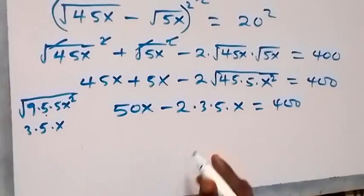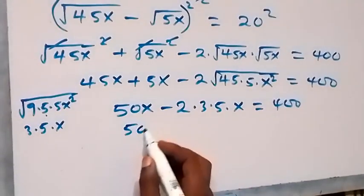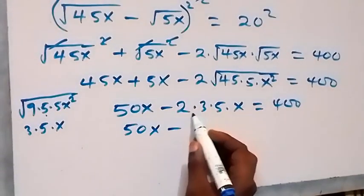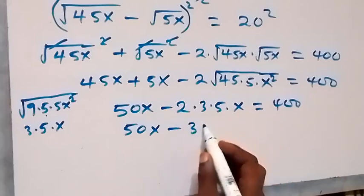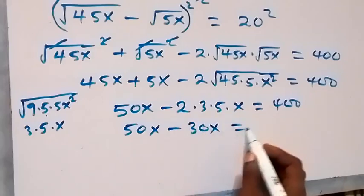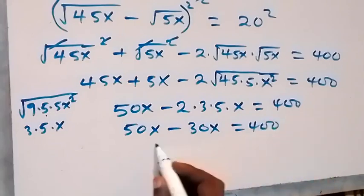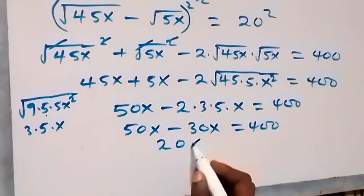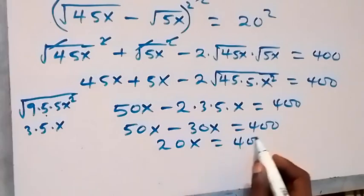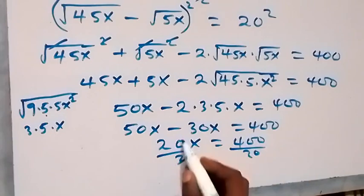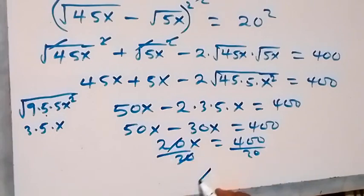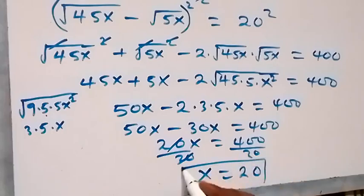That simplifies to 20x equals 400. Dividing both sides by 20, the 20 cancels out and we get x equals 20. So from Method 1, x equals 20.